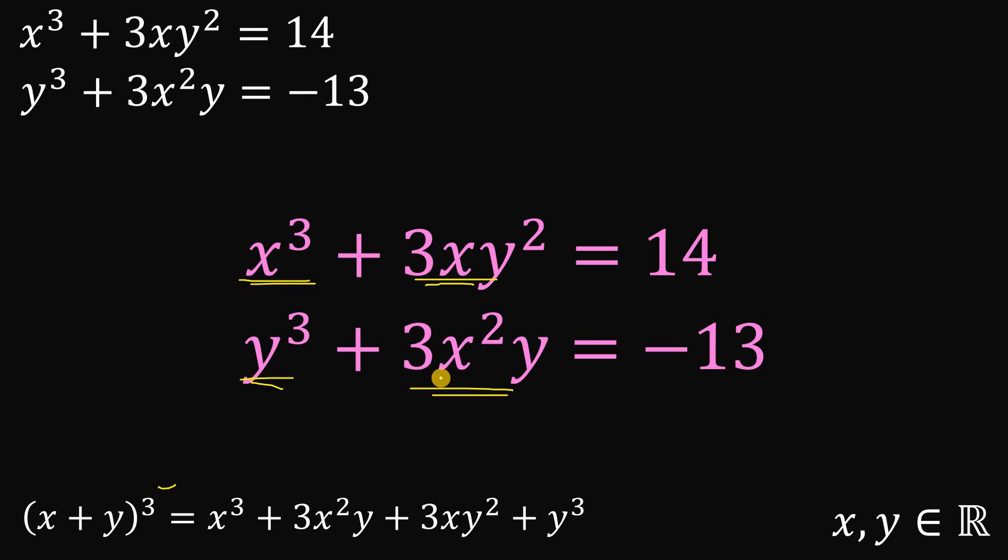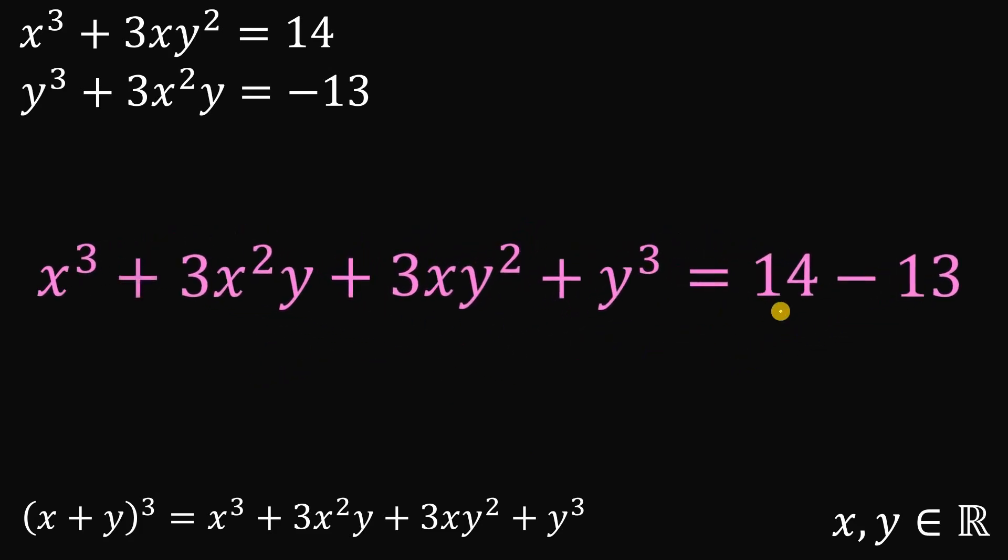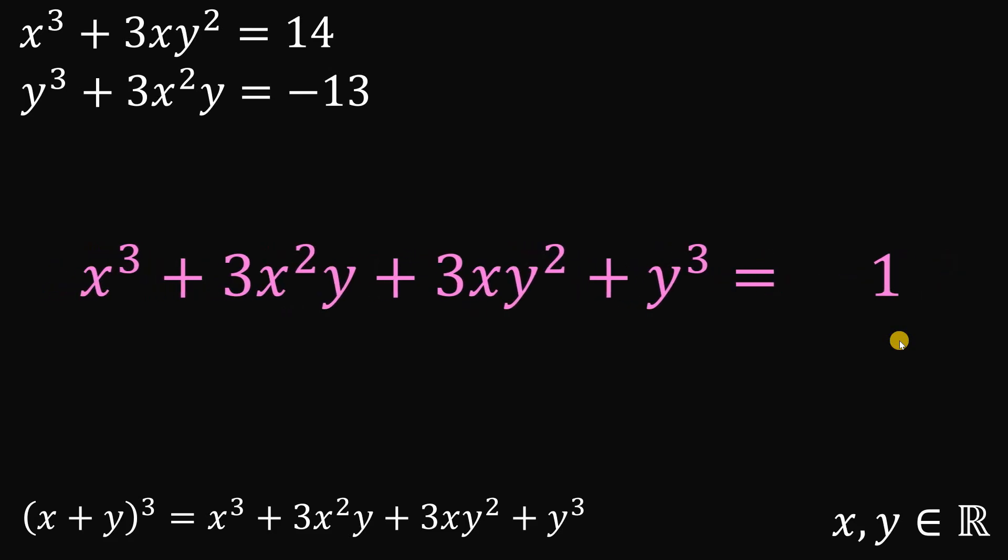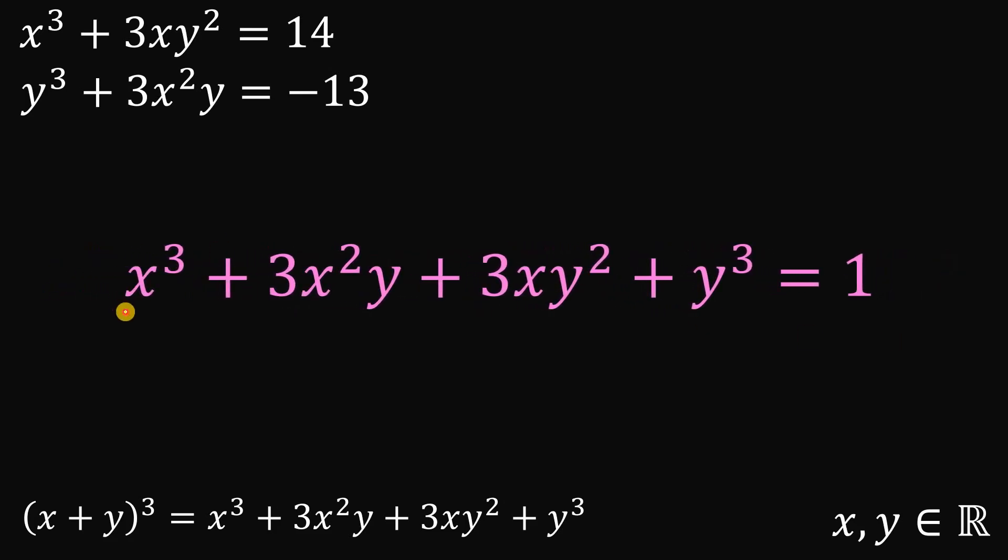So why not add these two equations like this. 14 minus 13, we know this is just 1. Now x³ + 3xy² + 3x²y + y³, we know we can factor this out. We can write this as (x + y)³.